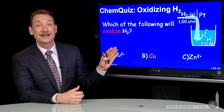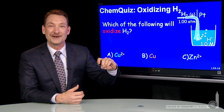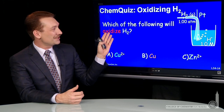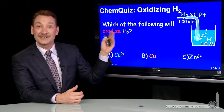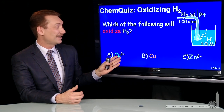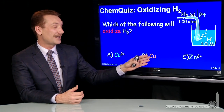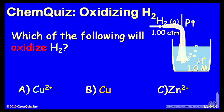Let's look at a reaction occurring in conjunction with the standard hydrogen electrode. The question here is: which of the following will oxidize hydrogen gas? Copper ions, copper metal, or zinc ions?